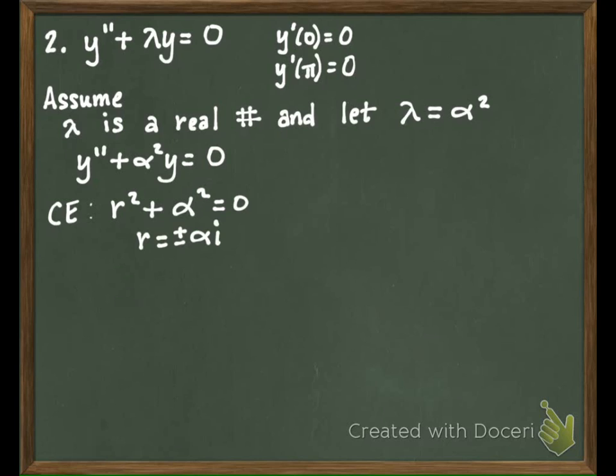So that's just like before when we had lambda equal to four. Then here alpha came out to be two, plus or minus two.